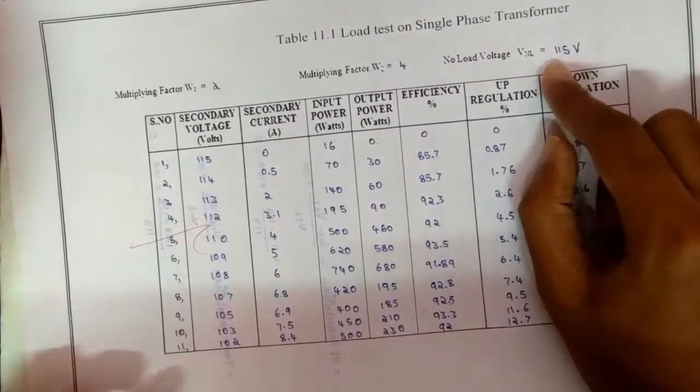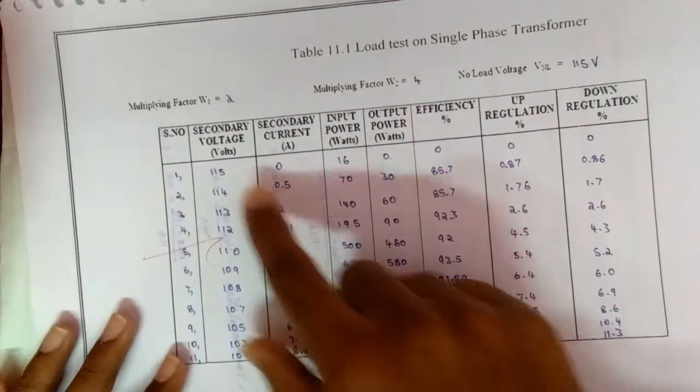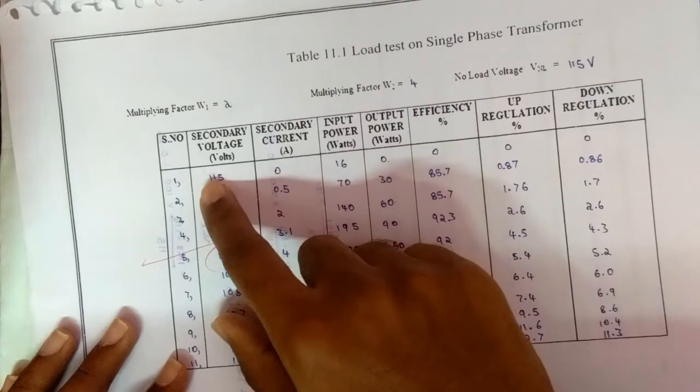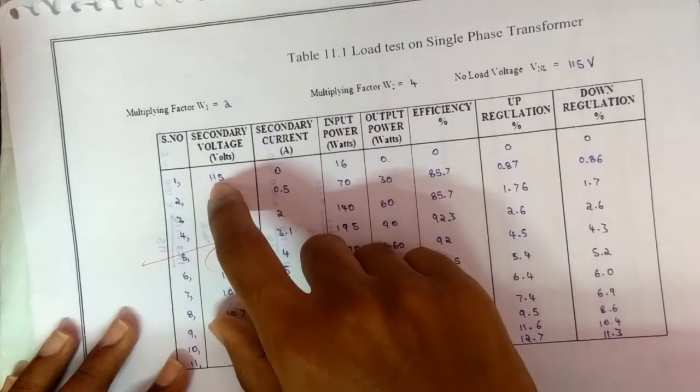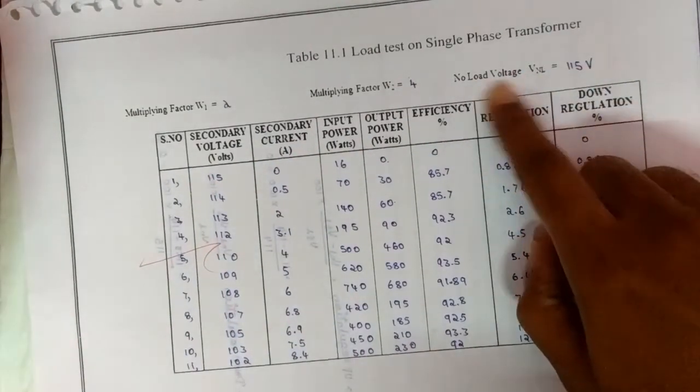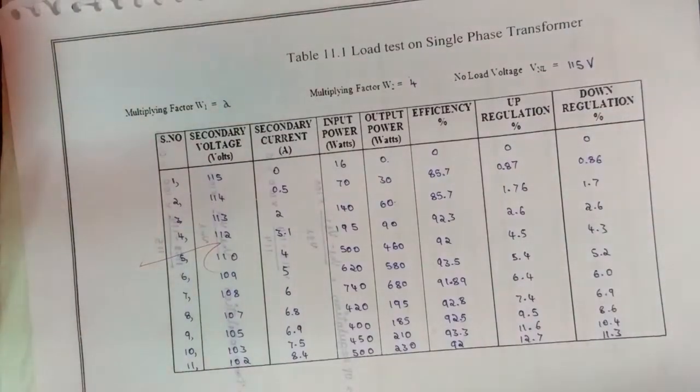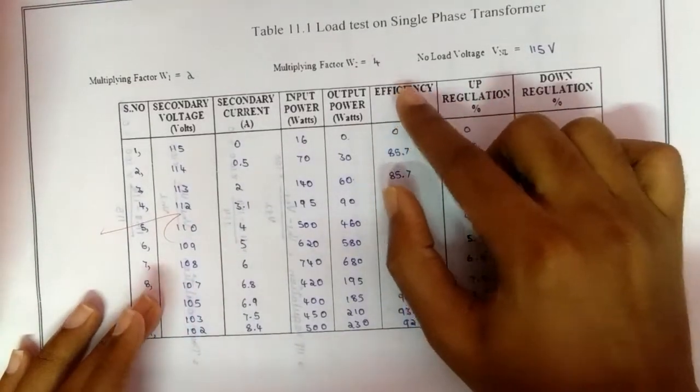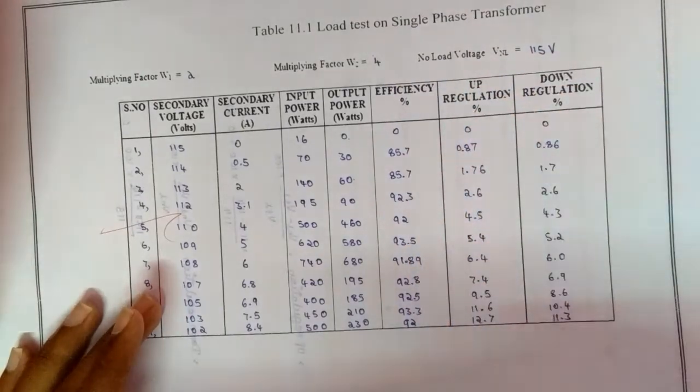The no-load readings will be taken at the first reading, so the secondary voltage is 115 volts. So the no-load voltage will be 115.